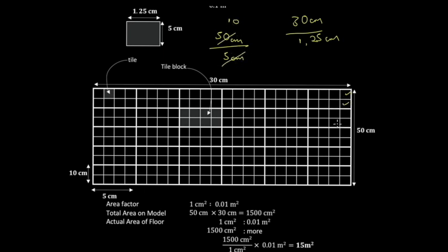You can use plain paper for this part, using a 30-centimeter ruler, and you'd be able to achieve this layout. This side would obviously be longer as mentioned. Make sure you label it — if you're using blocks, label it as your tile block. If you don't want to use blocks, just indicate that it is a tile.